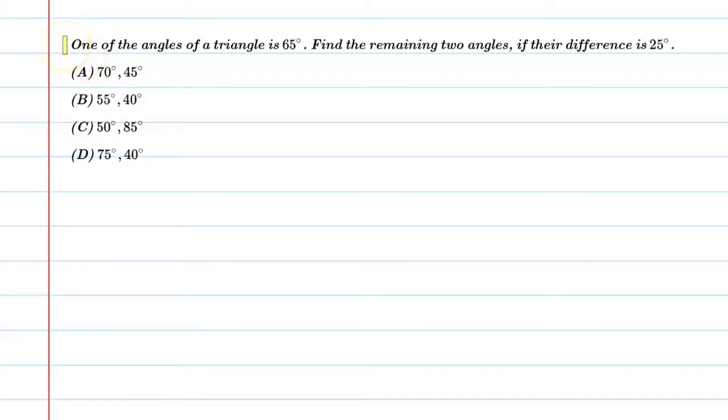Hello students, let's solve this question. One of the angles of a triangle is 65 degrees. Find the remaining two angles if their difference is 25 degrees.